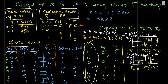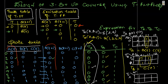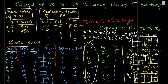For TC, filling the minterms based on the table — sigma of 0, 1, 2, 3, 4, 5, 6, 7 — shows that everything is 1. All 8 ones can be grouped together, so the expression for TC equals 1.